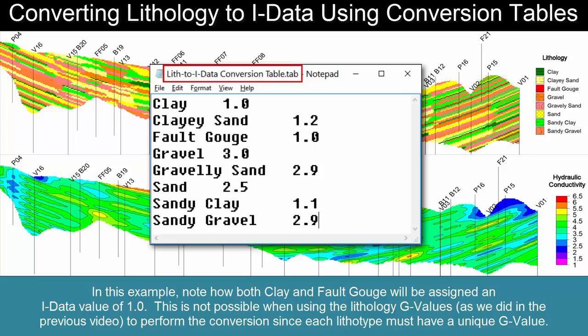In this example, note how both clay and fault gouge will be assigned an I-data value of 1.0. This is not possible when using the lithology G-values as we did in the previous video to perform the conversion, since each lithotype must have a unique G-value.